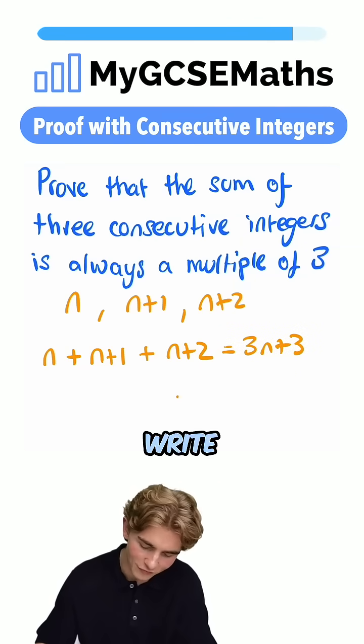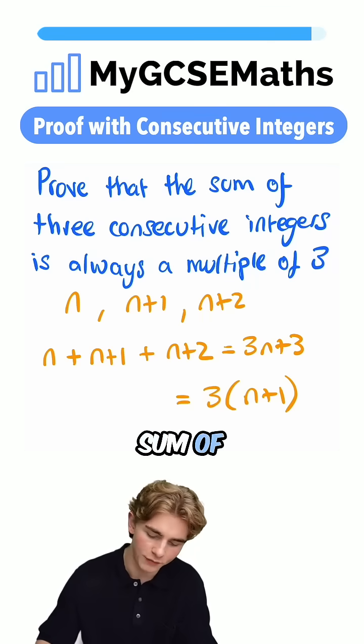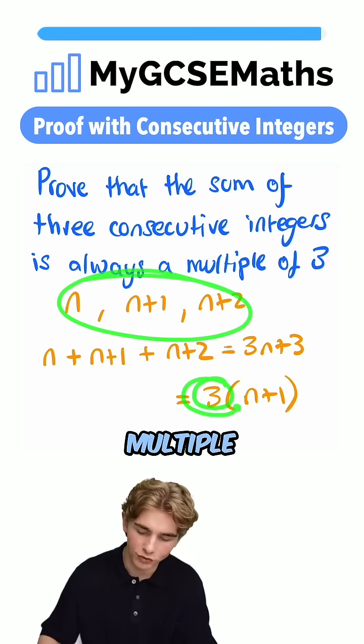Pulling out a factor of three, we can write this as three times by n plus one. That's going to show that the sum of three consecutive integers is a multiple of three.